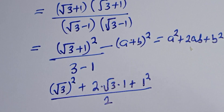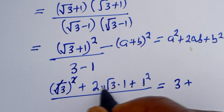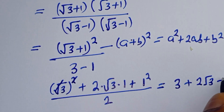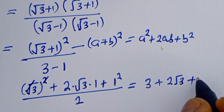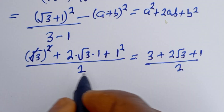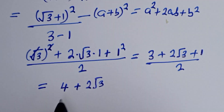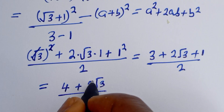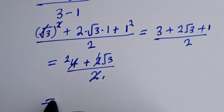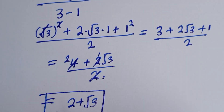This is equal to: in the numerator we have 3 plus 2 multiplied by root 3 multiplied by 1, that is 2 root 3, plus 1 squared that is 1, over the denominator which is 3 minus 1, that is 2. Now 3 plus 1 we have 4 plus 2 root 3 over 2, which simplifies to 2 plus root 3. And this is the final answer.